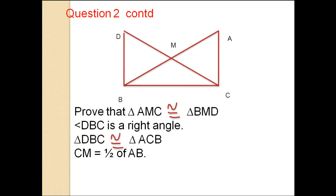Prove that triangle AMC is congruent to triangle BMD, angle DBC is a right angle, triangle DBC is congruent to triangle ACB, and CM equals half of AB.